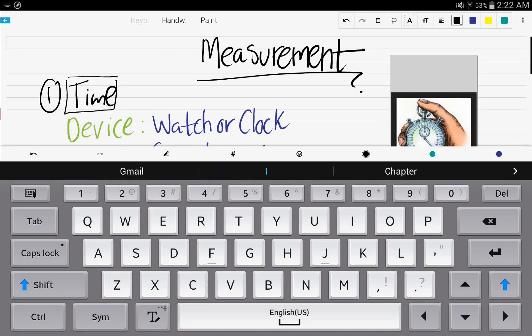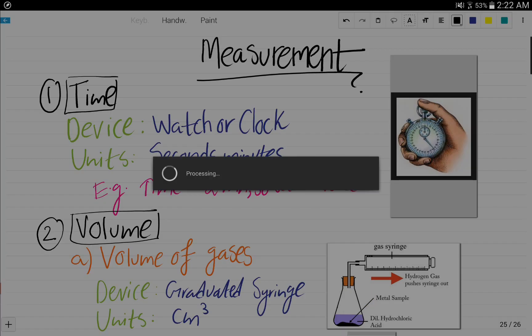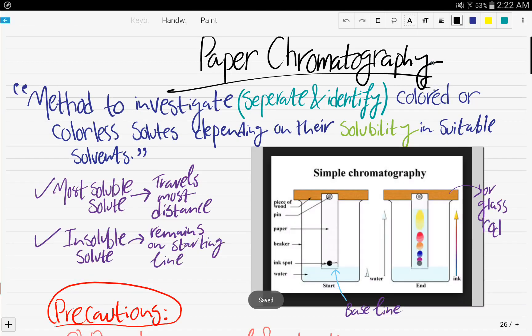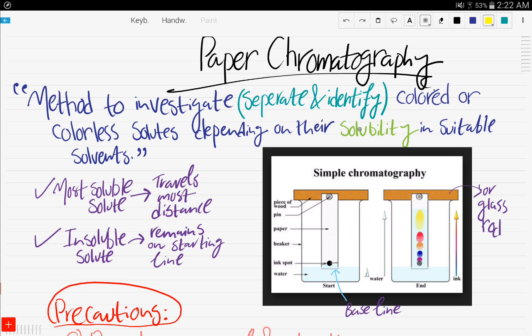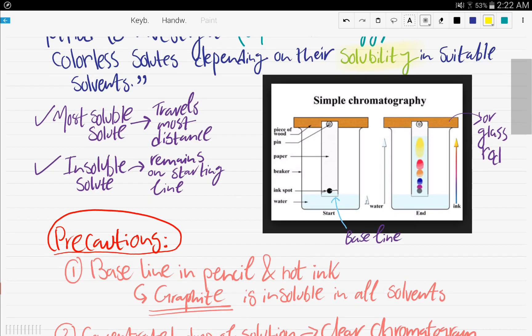So now we'll go to a really important part of chapter number two, and that's paper chromatography. So, what's paper chromatography? It's a method to investigate, that is, separate and identify, a colored or colorless solute, depending on their solubility in suitable solvents. So, here is the diagram of a simple chromatography process.